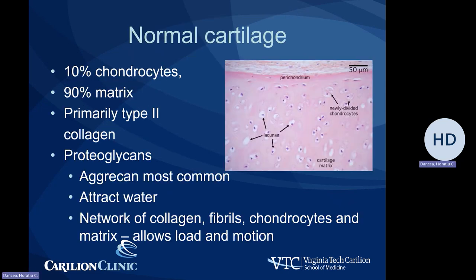First, I would like to talk about normal cartilage, which is formed about 10% out of cells called chondrocytes, and 90% is matrix, which is primarily composed of type 2 collagen as well as proteoglycans, with aggrecan being the most common. Those attract water, creating the soft appearance of the cartilage. So in conclusion, cartilage is a network of collagen fibrils, chondrocytes, and matrix, which allows load and motion with good elasticity.